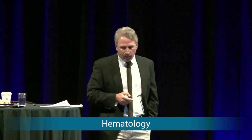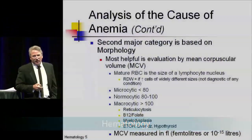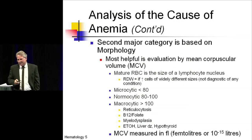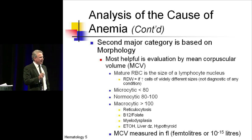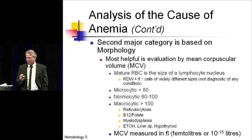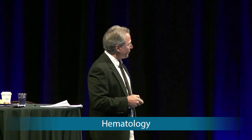The second major category, which we're probably most used to thinking about, is based upon the size of the red cells. If you get a photomicrograph on the examination showing a smear of red blood cells, look for the lymphocyte. The size of a normal mature RBC is the same size as a lymphocyte nucleus — it's not uncommon on exams to test whether you recognize that connection, showing cells smaller or larger than a lymphocyte nucleus so you can make the diagnosis.